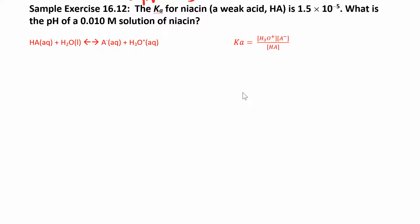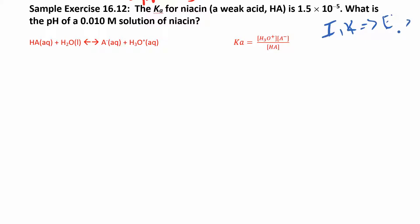Let's look at one more weak acid problem. They tell you the Ka for niacin, which is a weak acid. They don't give you the formula — just treat it like a generic weak acid, HA. They give you the Ka and an initial concentration, and they want to know what the pH is. So we need to solve for the equilibrium hydronium concentration, and then we can find the pH.